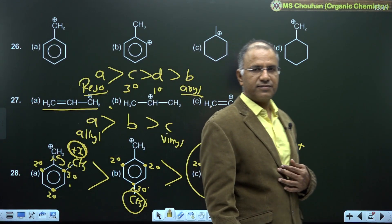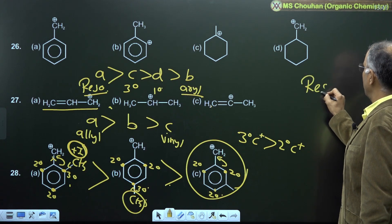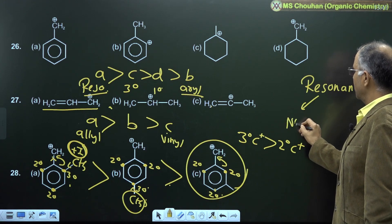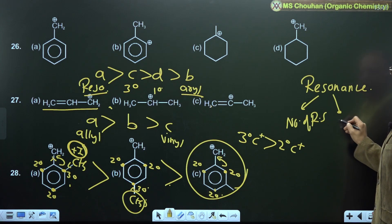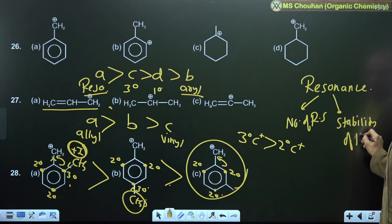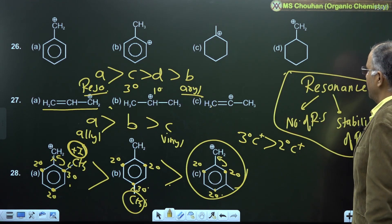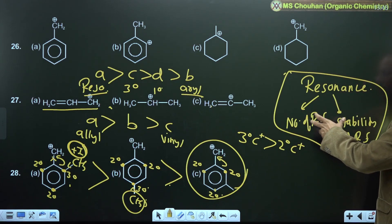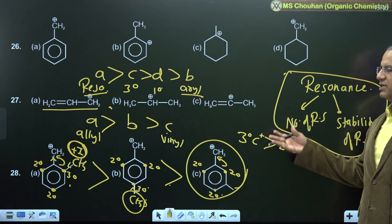To summarize the method for resonance comparisons: first check resonance, then check the number of RS, then check the stability of the resonating structures — more stable RS means greater overall stability.